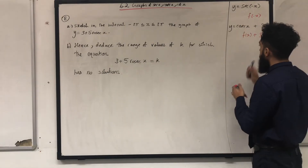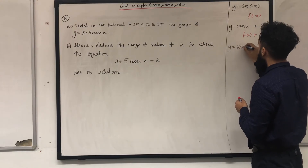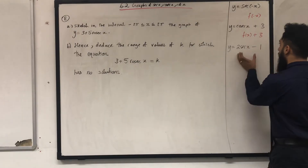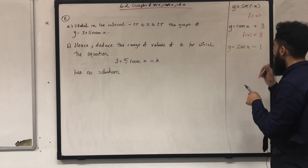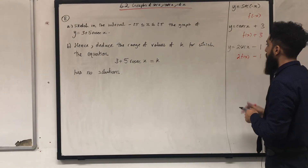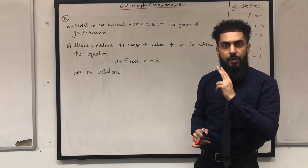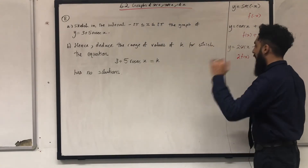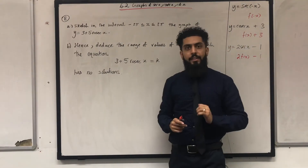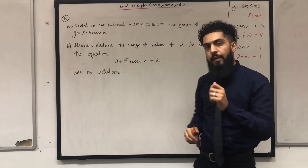Another example: y = 2 sec x - 1. This is a combination of transformations of the form 2f(x) - 1. You take the graph of sec x, multiply the y-coordinates by 2 keeping the x-coordinates the same, and then shift the graph one unit downwards. Now I'd like you all to attempt this particular exam question.